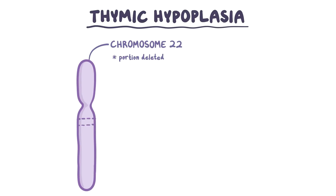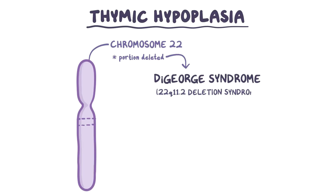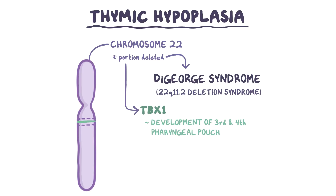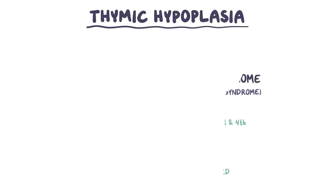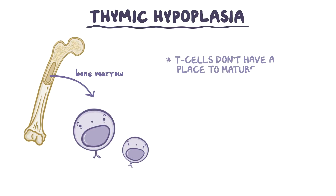In thymic hypoplasia, a small portion of chromosome 22 is deleted in a condition known as DeGeorge syndrome, or 22q11.2 deletion syndrome. On chromosome 22, there's a gene called TBX1 that controls the development of the third and fourth pharyngeal pouch during the prenatal period. So when there's a 22q11.2 deletion, there's no TBX1 gene, and the thymus and parathyroid glands end up underdeveloped. In thymic hypoplasia, the immature T cells from the bone marrow don't have a place to go to mature, and so these people often have a deficiency in mature T cells.